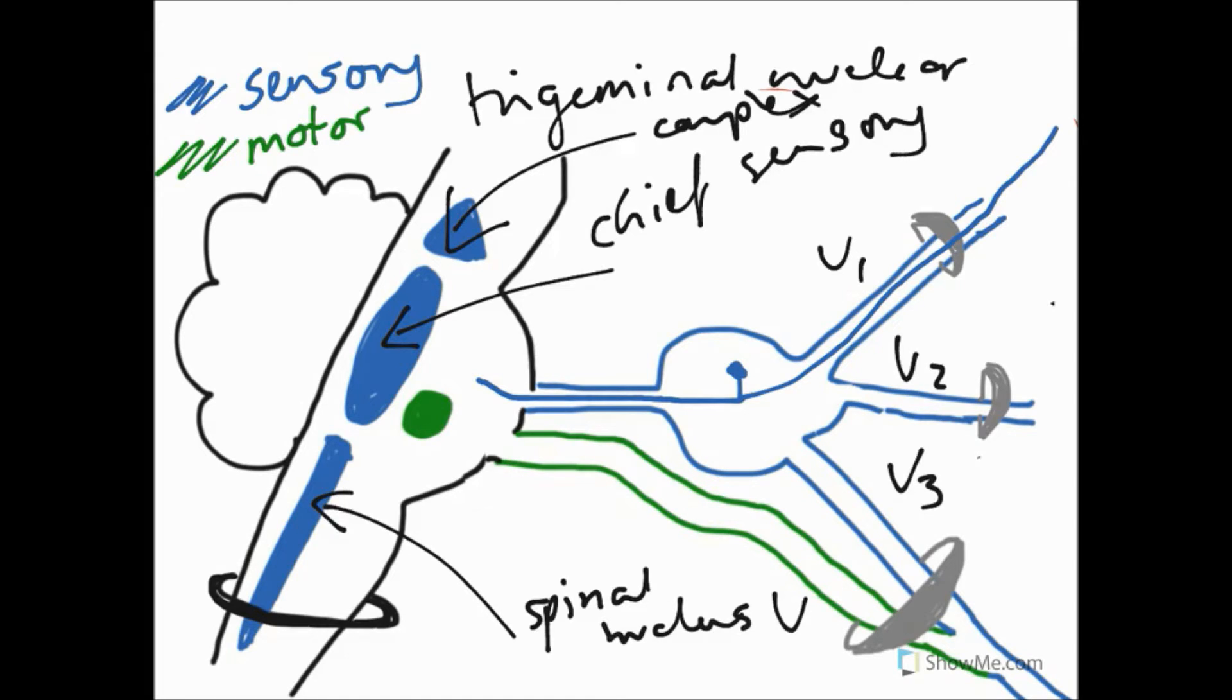So our chief sensory nucleus is going to be dealing with, or is going to be receiving information about light touch and discriminative touch from the face via the distributions as set out by V1, V2, and V3. So imagining this was carrying information about light touch from V1 and it would be synapsing, just doing red synapsing here on this nucleus.